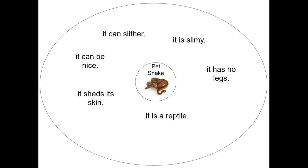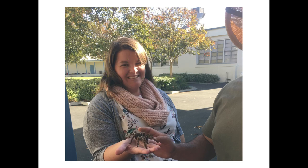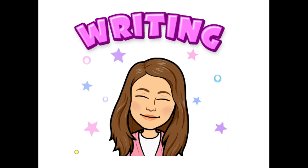So now we've brainstormed ideas about a pet tarantula and a pet snake. Now that we've brainstormed, we have to decide which one we want. Miss Montiel is going to decide to write about a pet tarantula, because I've actually had a chance to hold a tarantula before and it was pretty cool. So now we get to get started with our writing.